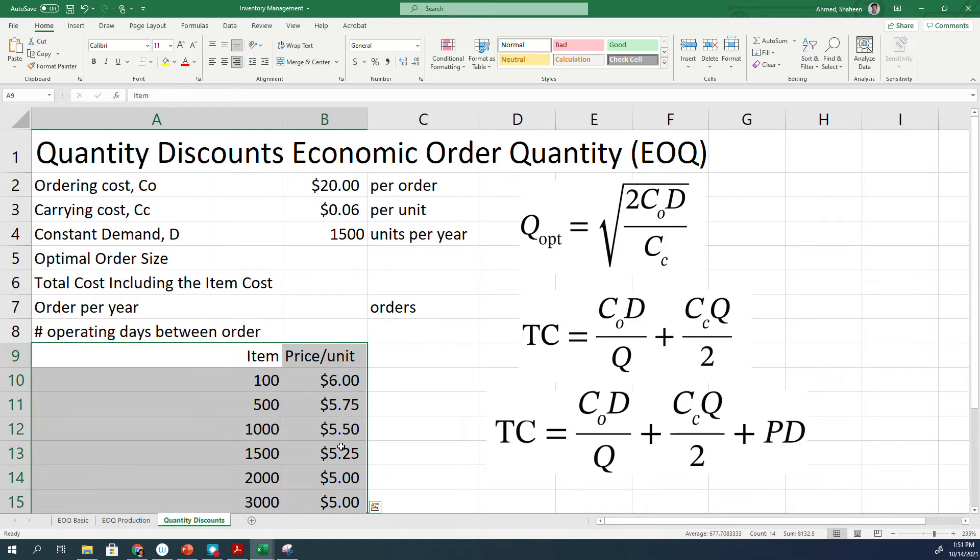For example, if you order 1,000 units, they're going to charge $5.50 for each item. If you order 3,000, they will charge only $5 per item.